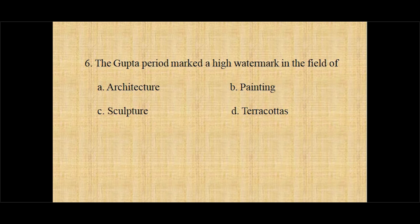The correct answer to question five is option A, Fahian. Question number six: The Gupta period marked a high watermark in the field of — option A architecture, option B painting, option C sculpture, option D terracottas.